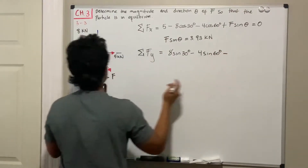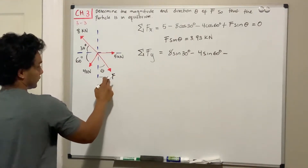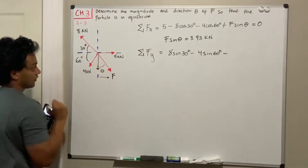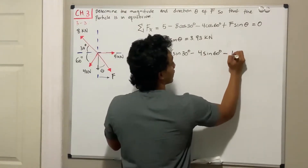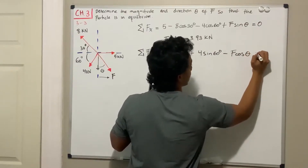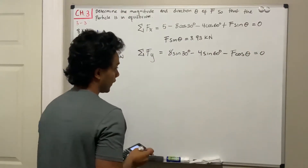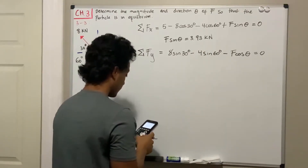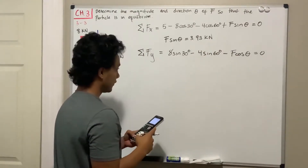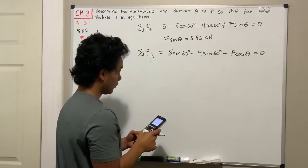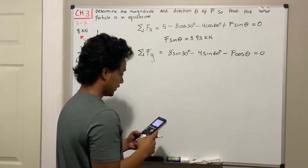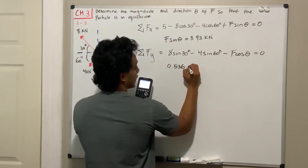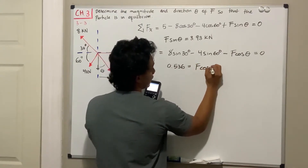Then we subtract force F going down. The amount in the y direction is given by the adjacent side of this angle, so we use F cosine of theta, and that equals zero. Cleaning this up, eight sine of 30 degrees minus four sine of 60 degrees equals F cosine of theta, which gives 0.536 equals F cosine of theta.